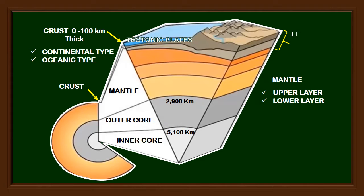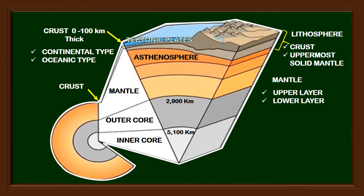The lithosphere of the Earth consists of the crust and the uppermost solid mantle. The asthenosphere, also known as the plastic layer of the Earth, is where the molten materials are located. The lithosphere rests on the asthenosphere, which is why the ground that we are living on keeps on moving.